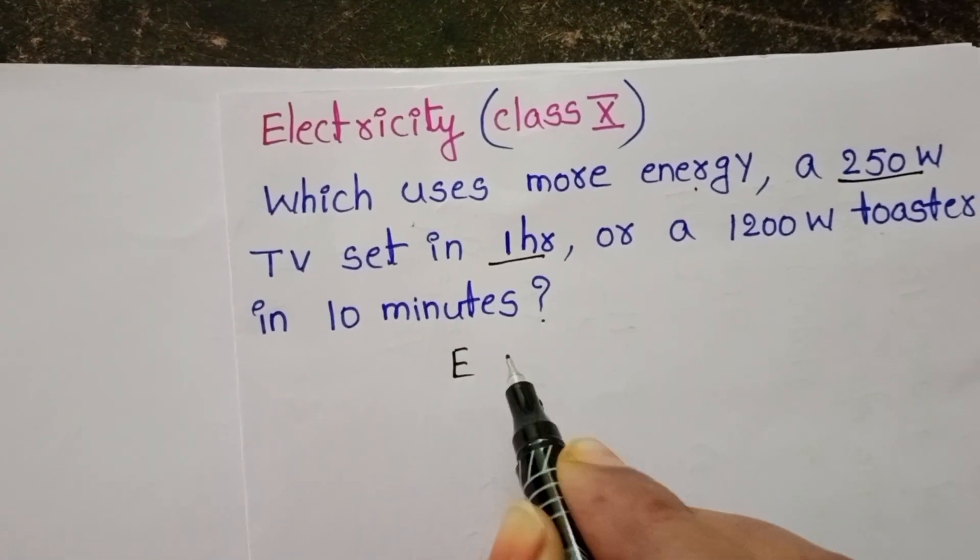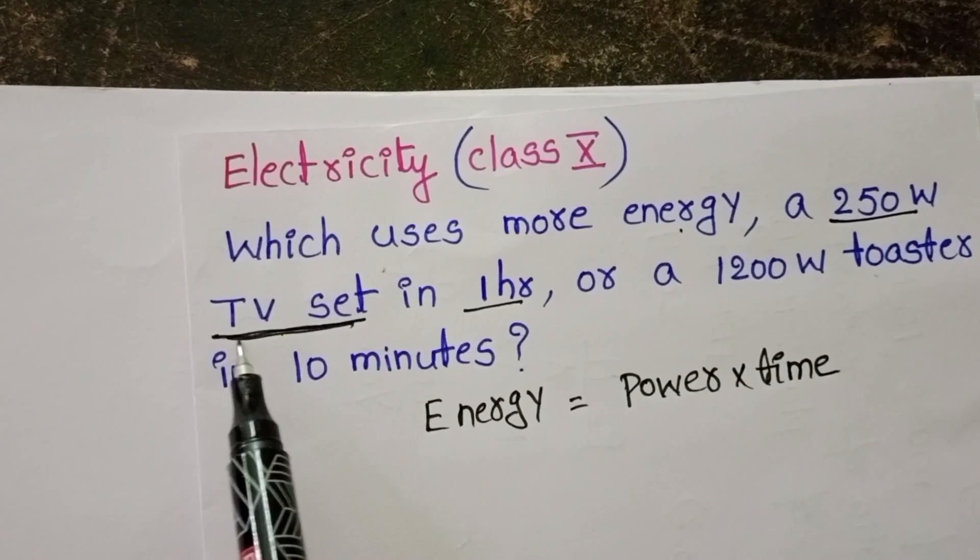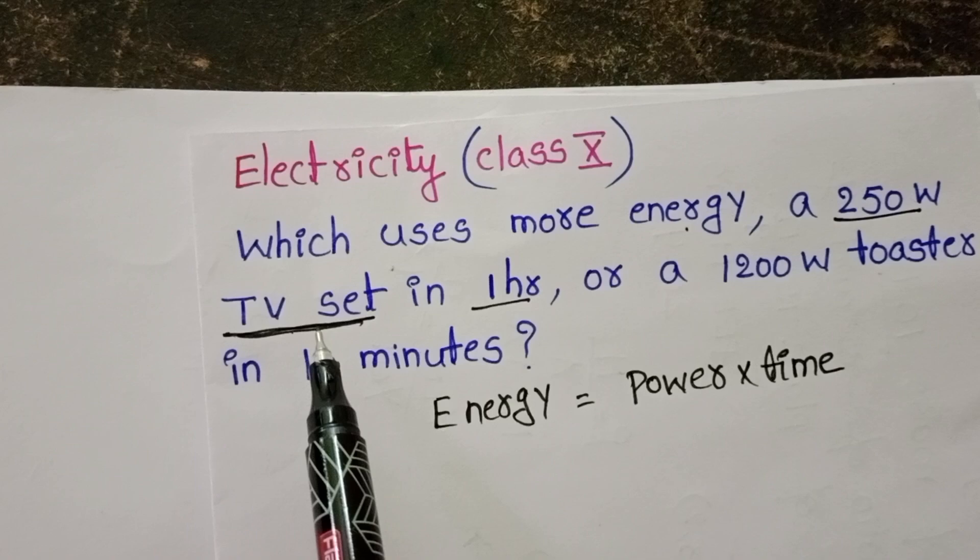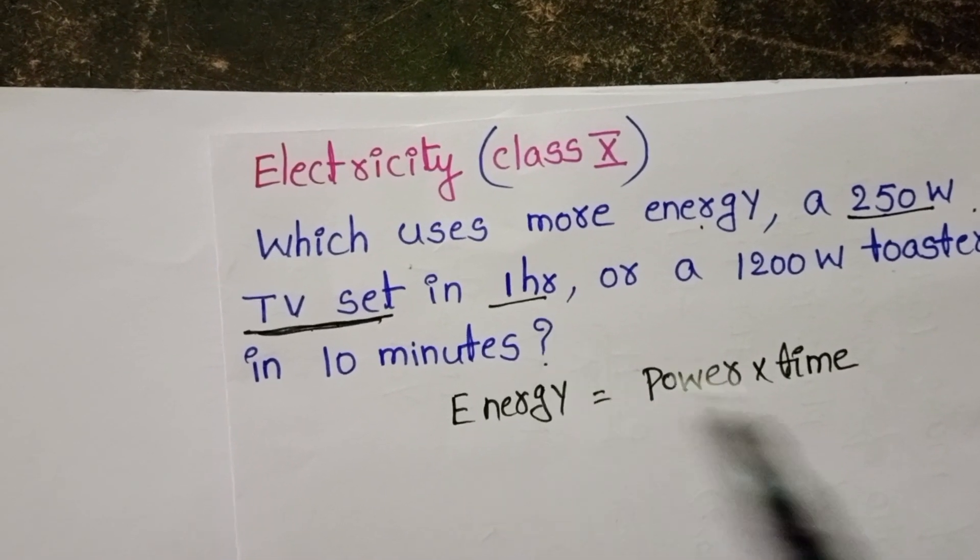Energy formula: energy equals power into time. First device is TV set. This TV set power is 250 Watt and it utilizes in 1 hour.